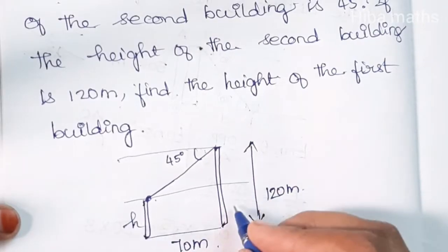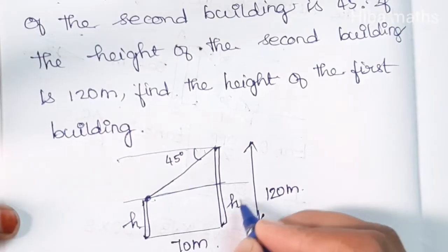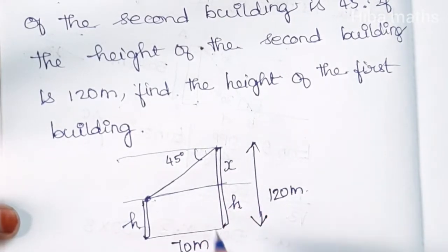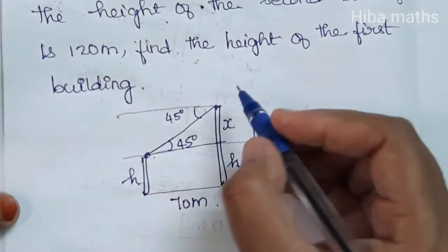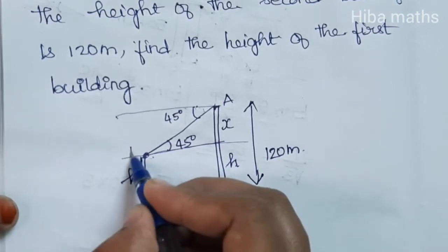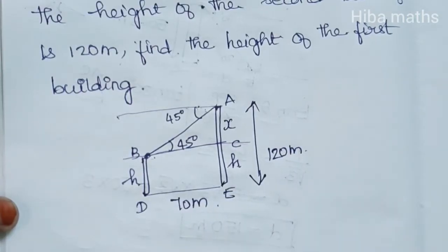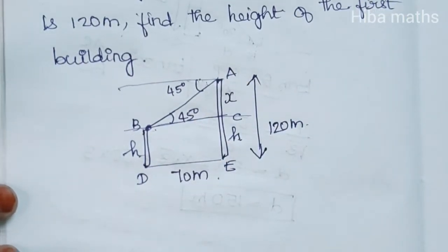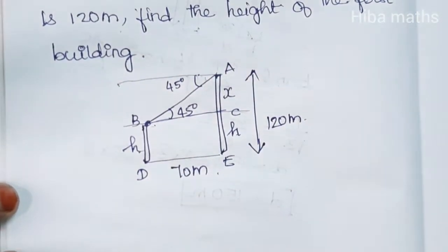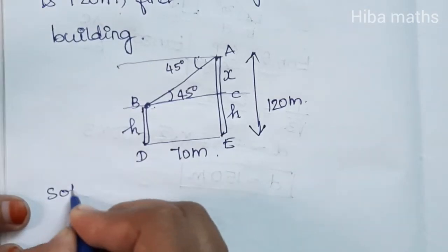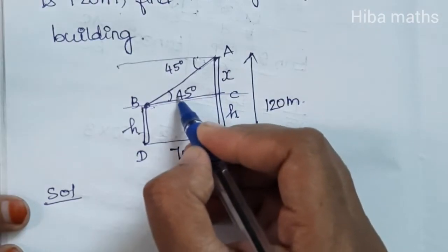This is the height of the first building and this is the height of the second building. The height of the second building is shown here. Now, looking at the small triangle ABC — tan 45. So, why is tan used here? Opposite over adjacent.